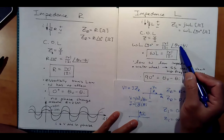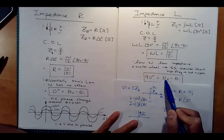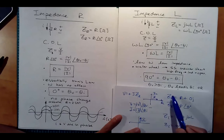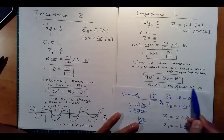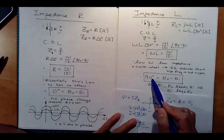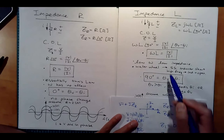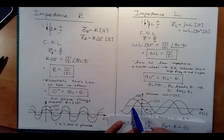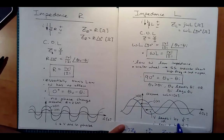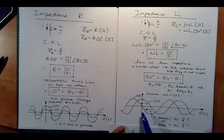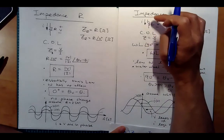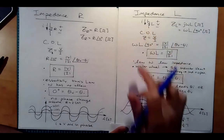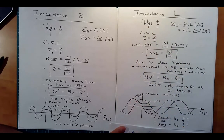For the phase: 90 equals theta_V minus theta_I, so theta_V is greater than theta_I, meaning V leads I, or equivalently, current lags voltage by 90 degrees — a quarter cycle. If we assume ωL equals 1, we would see the voltage leading the current by a quarter period. For a pure inductor, you should always expect the current to lag the voltage by 90 degrees.